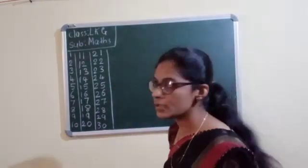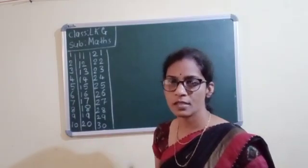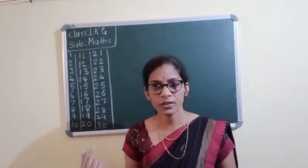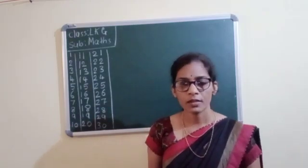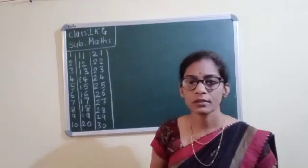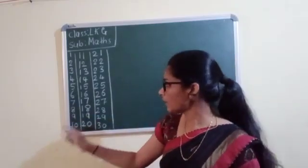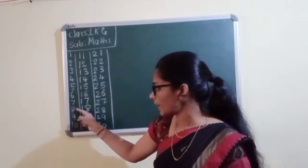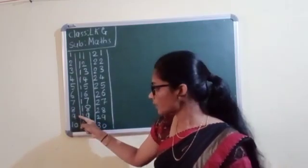Okay, 'after number' means what comes next. For example: 1 after — what children? 1 after is 2. And 8 after — what? 8 after, the number is 9. You look at here, where is the 8? 8 after is 9.